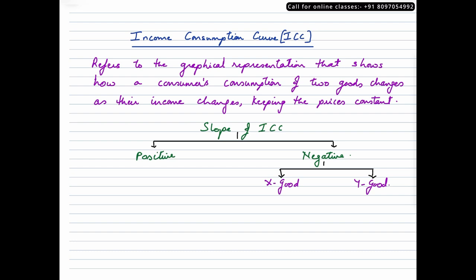Before we move on to the slope of the ICC curve, a quick recap. When we talk about income and its relationship with various types of commodity, we focus on normal goods and inferior goods. Income varies directly with normal goods and inversely with inferior goods. Based on that relationship, the slope of the ICC curve is broadly categorized into positive or negative. Positive happens when both commodities are normal goods; negative happens when either the commodity on the X axis or the Y axis is an inferior good. We'll look at a diagrammatic representation of each of these three.